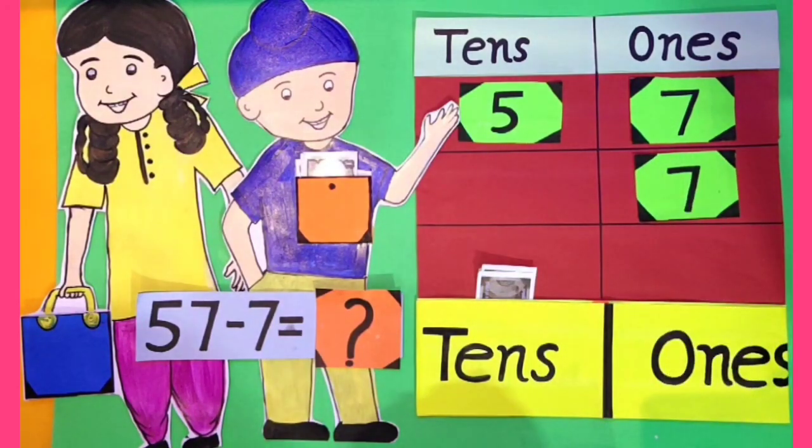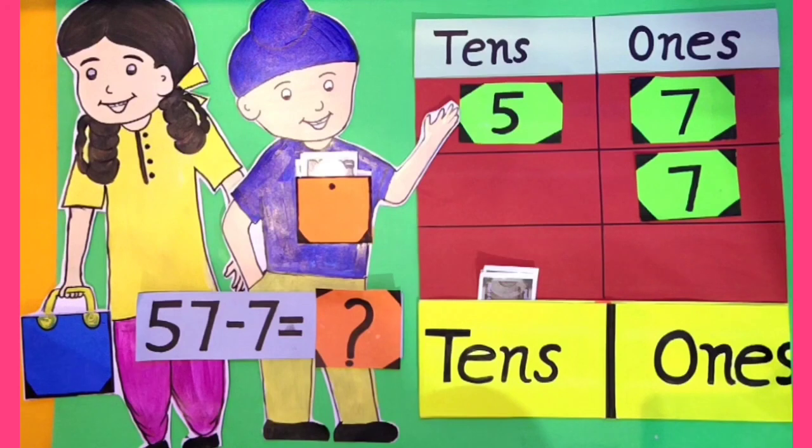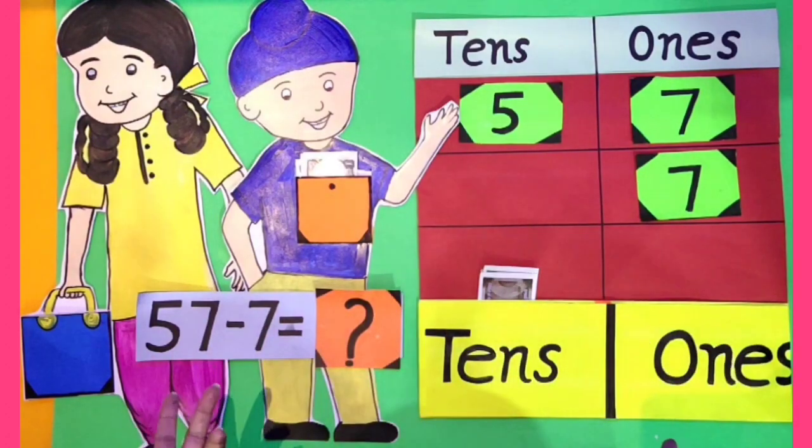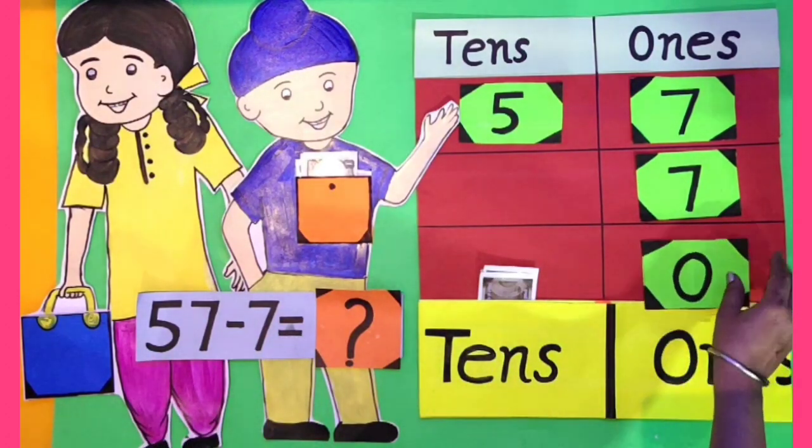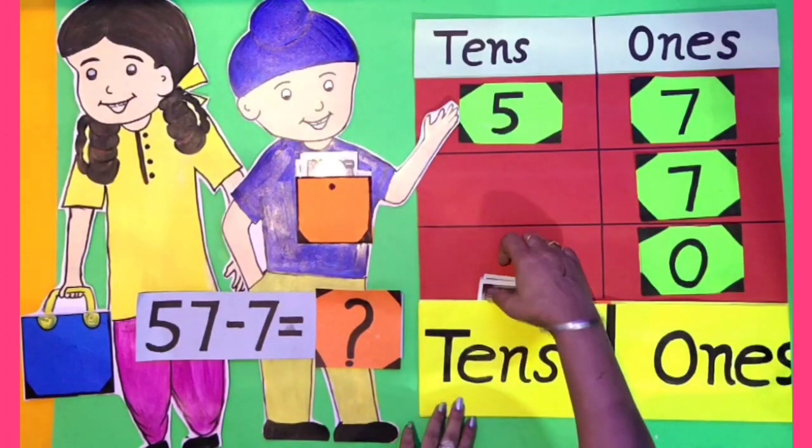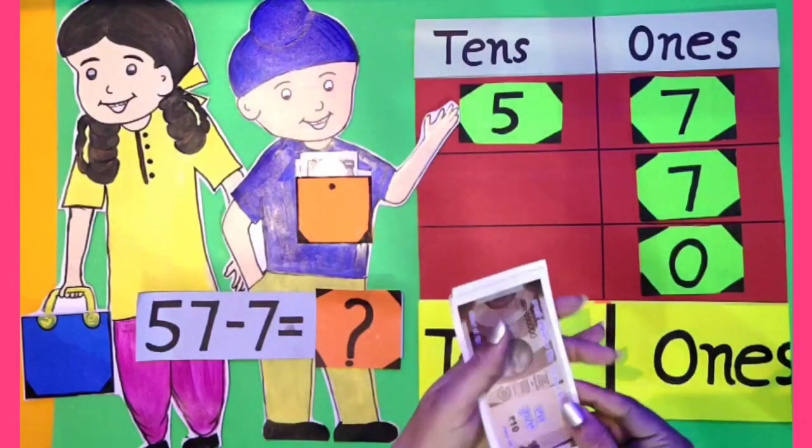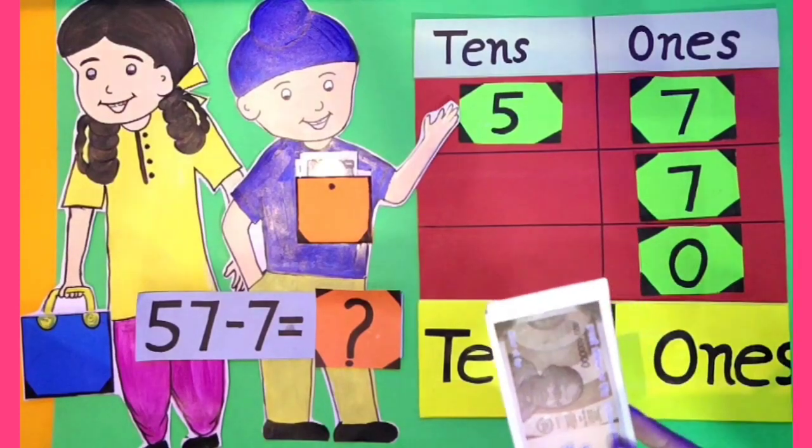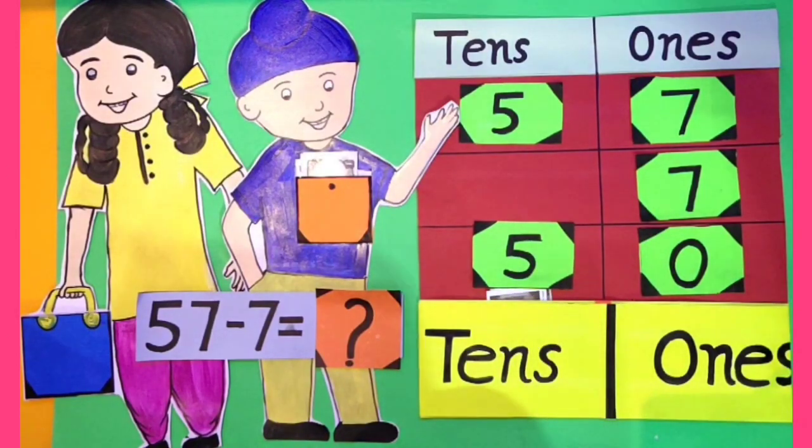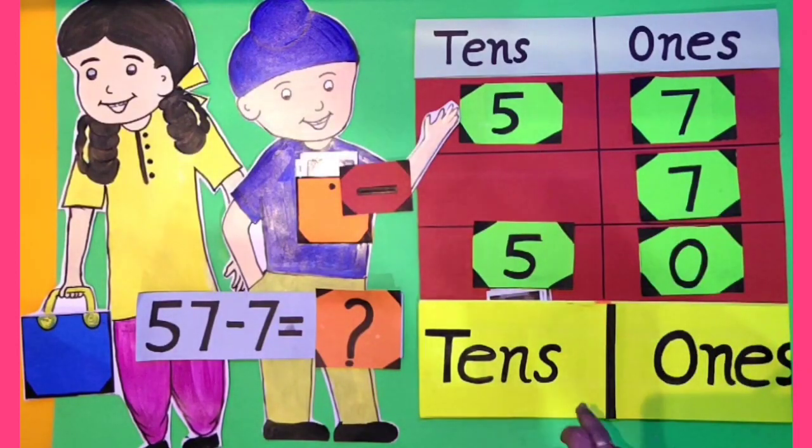Now kids, let's find out with how many rupees we are left. Let's see how many 1 rupee notes are here. Oh, there is nothing. That means 0 ones. Now let's see. Arpan is left with how many 10 rupees. 10, 20, 30, 40, 50. Arpan is left with 50 rupees. That means 5 tens.